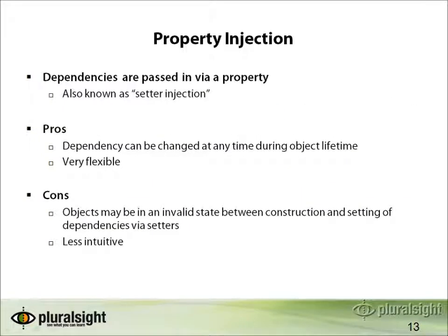Another type of injection is property injection, also known as setter injection, because you set the injected thing using the property setter. The pros are that the dependency can be changed at any time during the object lifetime, making it very flexible. However, objects are in an invalid state between construction and the setting of dependencies via setters, unless the constructor calls the setters. It can also be less intuitive because there isn't a single place that tells you exactly which properties need to be set and in what order for the class to be usable.